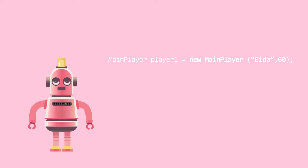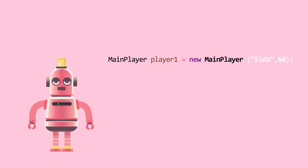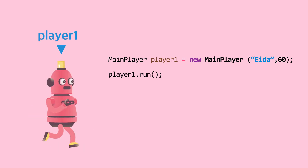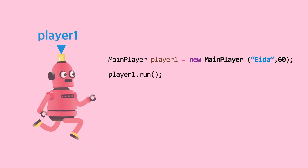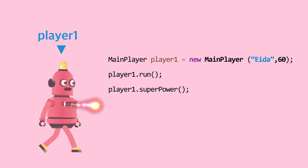Let's create a MainPlayer object. This object is a MainPlayer type with name player1. It is a new MainPlayer object with name Ada and speed 60. Player1 can run and can use super power.